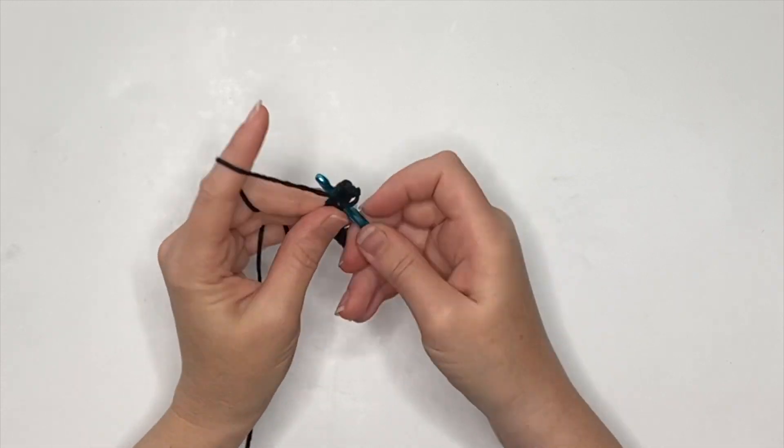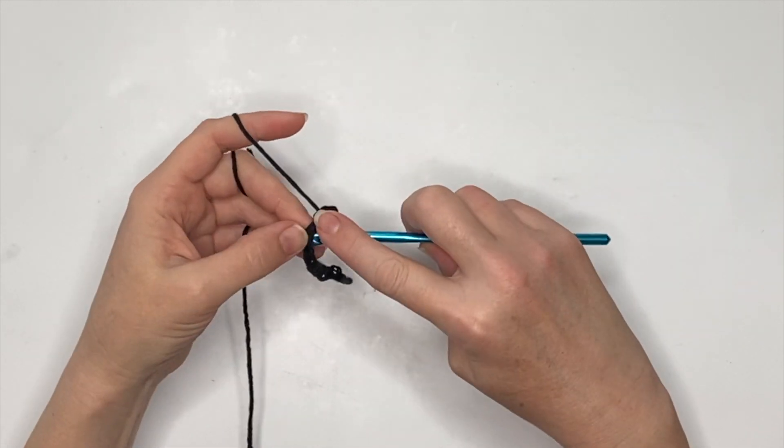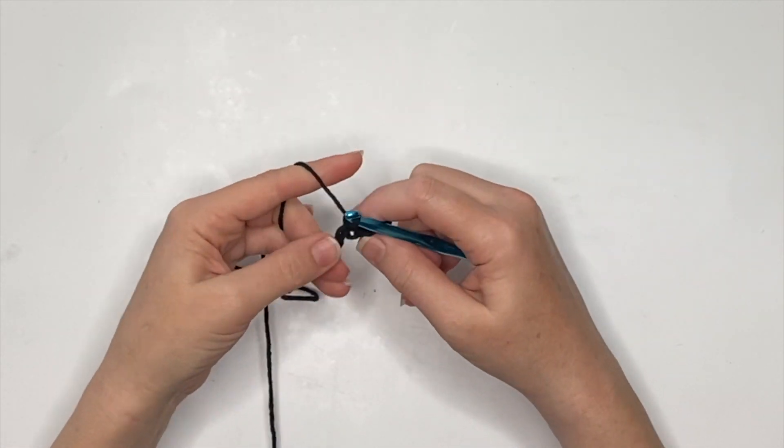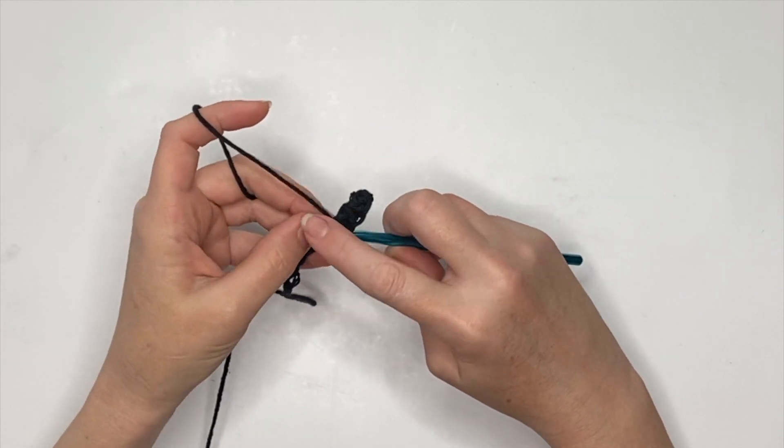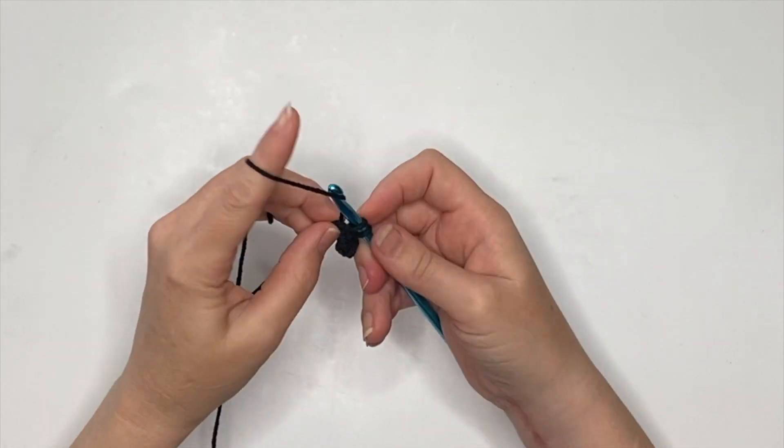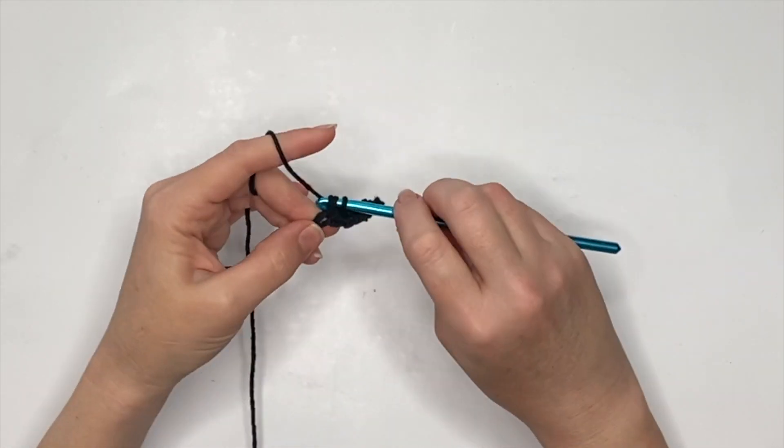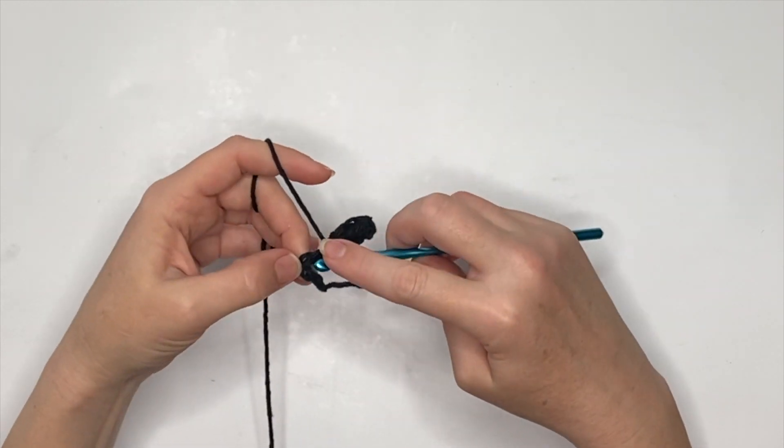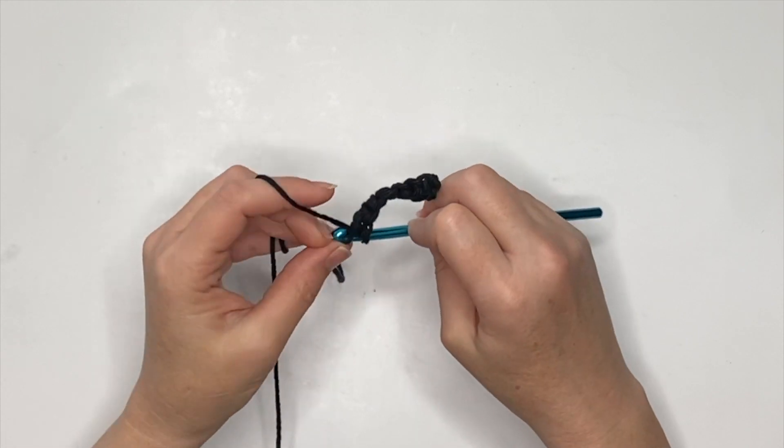So you'll have a total of nine stitches in this first row, and we're just going to repeat that same single crochet across for four rows. We'll have a total of four rows of single crochet stitches in this color A.